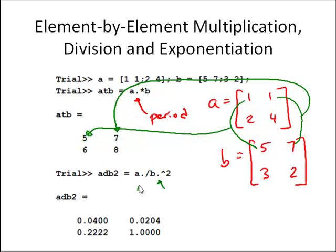We can do the same thing with division and exponentiation. Again, we need that period. The first element in adb2 is equal to 1 divided by 5 squared. This element here would be equal to 1 divided by 7 squared. It can be a little bit more challenging to visualize as we're working now with a matrix instead of a vector, but it's the same basic concept of element-by-element operations.